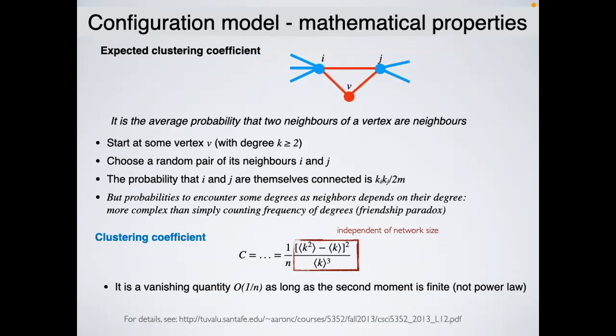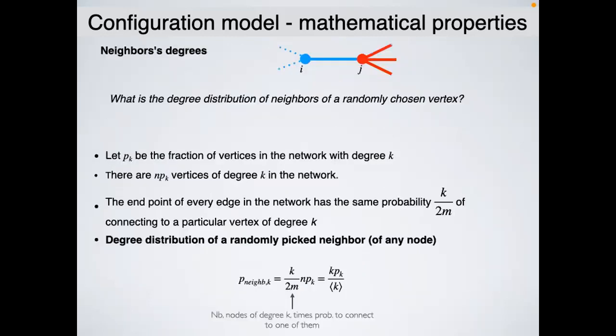There is still the possibility of self-loops, but for large enough graphs this is acceptable. What people often do is generate the network using this method, then remove any self-loops and multiple edges, ending up with a network that still has approximately the same degree distribution as the original.